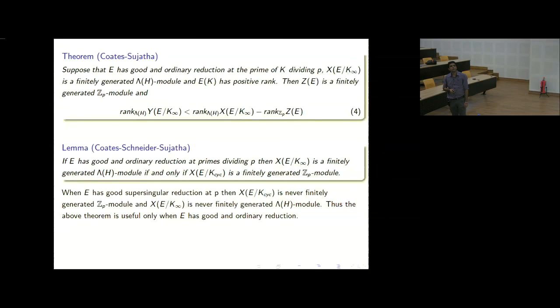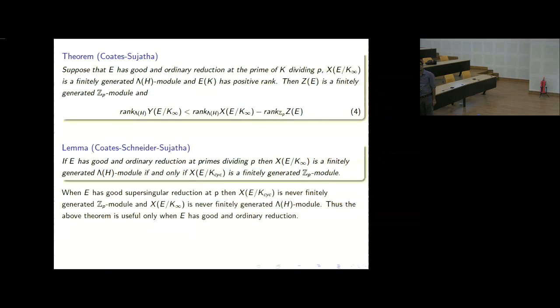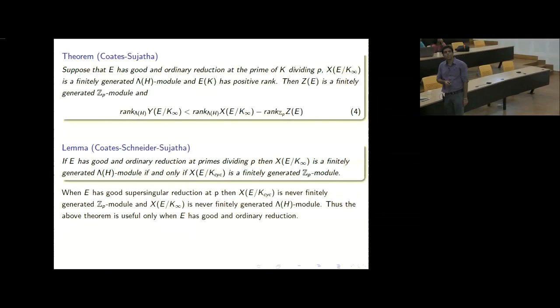One can compute the rank of Z_E. The key lemma, proved by Coates and Sujata in the non-commutative setting, says: if E has good ordinary reduction at primes dividing P, then the dual Selmer is a finitely generated Z_P·H module over the admissible extension if and only if the mu invariant over the cyclotomic extension is zero. So here is one criterion for when the dual Selmer is a finitely generated Z_P·H module. We can prove this only when the Mordell-Weil rank is positive.